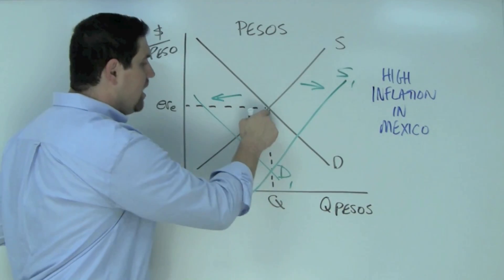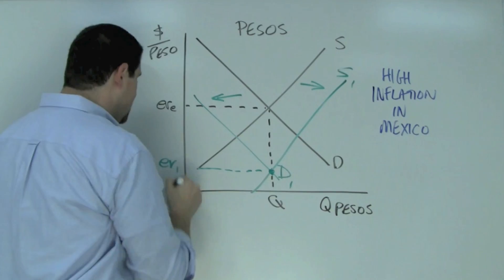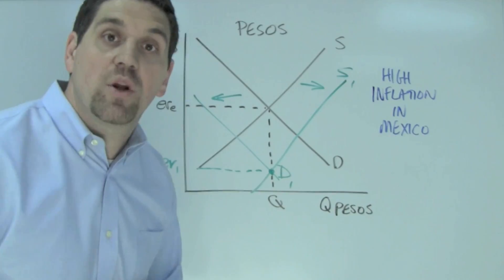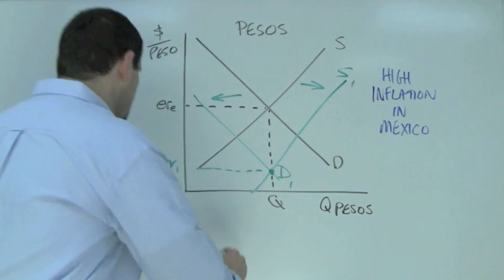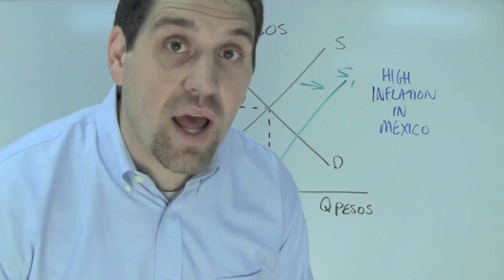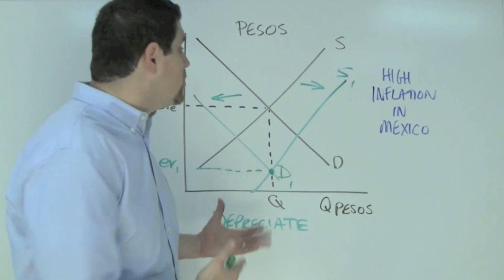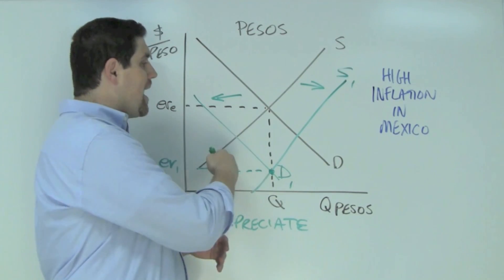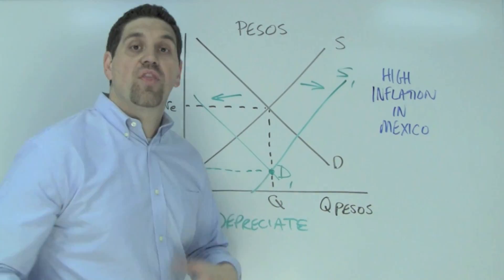We started here, we ended up here, and so the exchange rate fell, which means the peso depreciated. That's why the answer is D. Now you might be asking yourself, which one is it? Is it demand or supply for a test question?